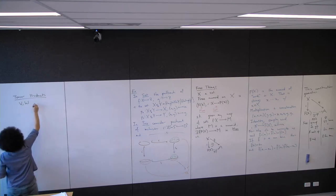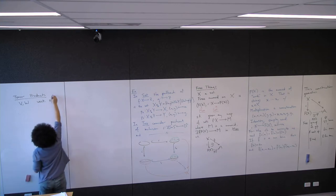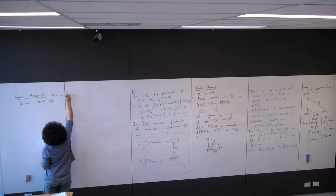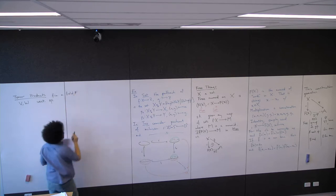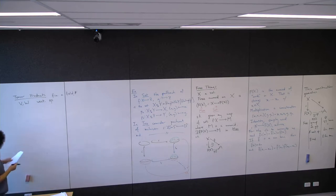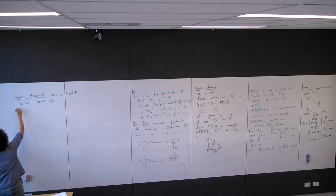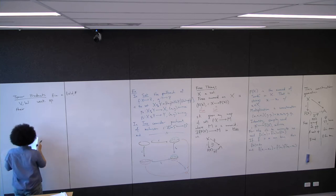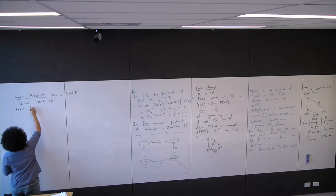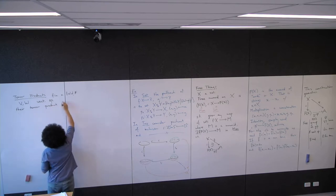We're going to do them with just vector spaces. Let V and W be vector spaces — fix a field k. The tensor product, which we denote V ⊗ W, is a vector space.